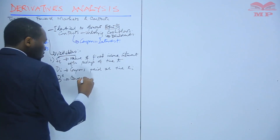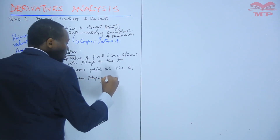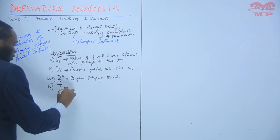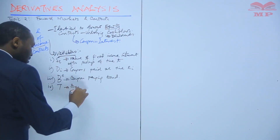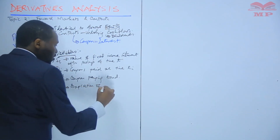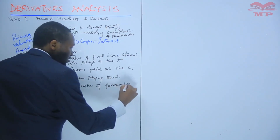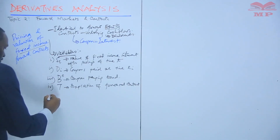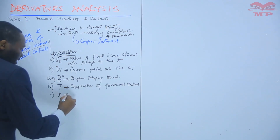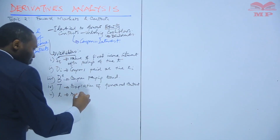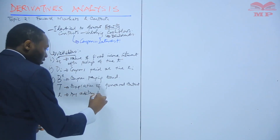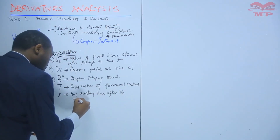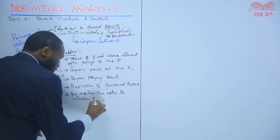The next variable is capital T — this is the expiration of the forward contract. Then we also have lowercase t — this is any arbitrary time after the initiation of the forward contract.